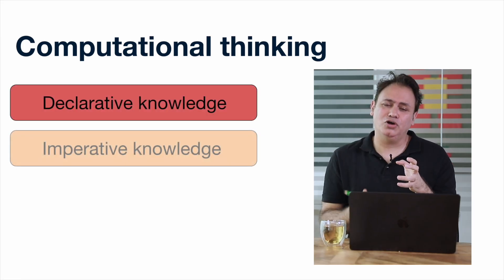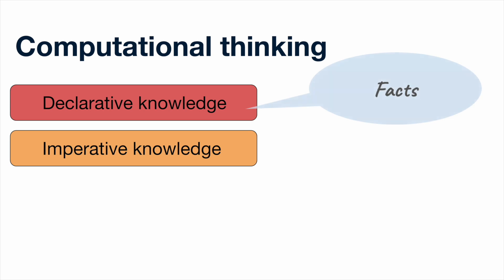So let's start with computational thinking. Essentially what we want is a way of solving problems computationally. Now what does that really mean? If you think in terms of knowledge, knowledge comes in two forms: declarative and imperative knowledge. Declarative knowledge is like a statement of facts — this is true. Imperative knowledge is about how do I get to that truth? How to? How do I get there?